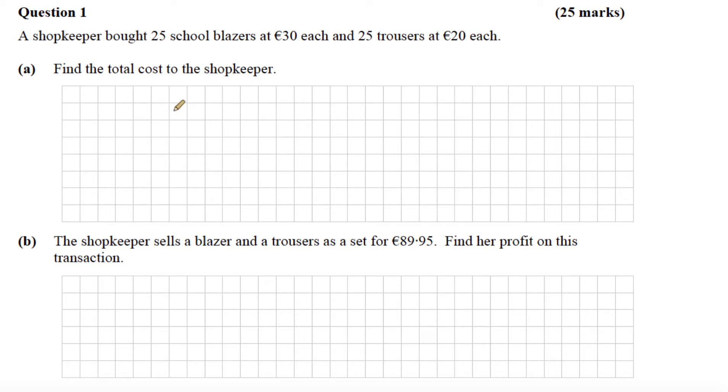That's going to be 25 times 30 euro which gives us 750, and 25 times 20 euro for the trousers which gives us 500. So the total cost is the addition of those two, which is 1250 euro.